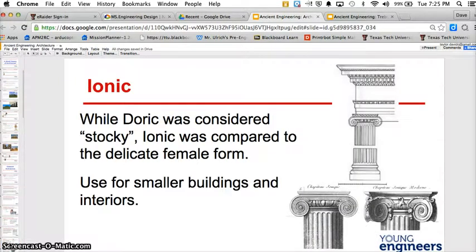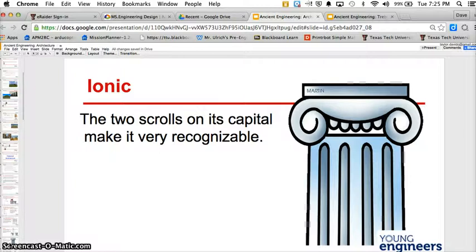Now, the second style is Ionic. While Doric was considered stocky, Ionic was compared to the delicate female form used for smaller buildings and interiors. So interiors meaning inside the building. The two scrolls in its capital make it very recognizable. You see the scrolls on the top of this capital here.